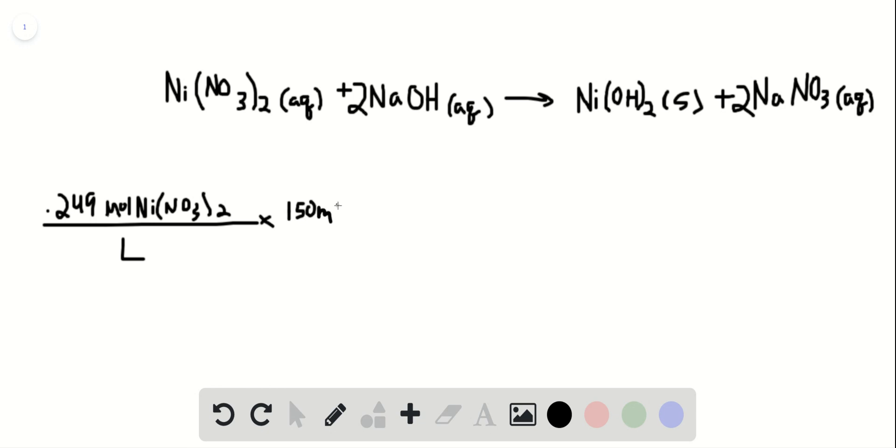We can convert this to liters so that those units will cancel, and of course there are 1,000 milliliters in a liter. So milliliters cancels, liters cancels, and we're left with moles of nickel-2 nitrate, which is what we want.